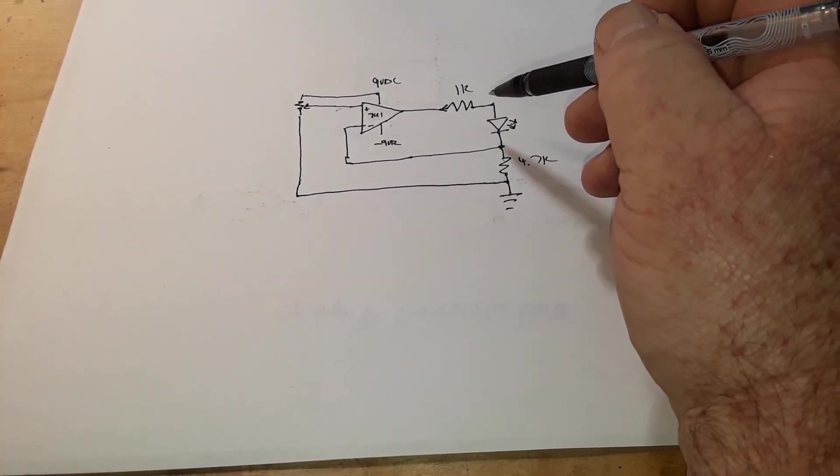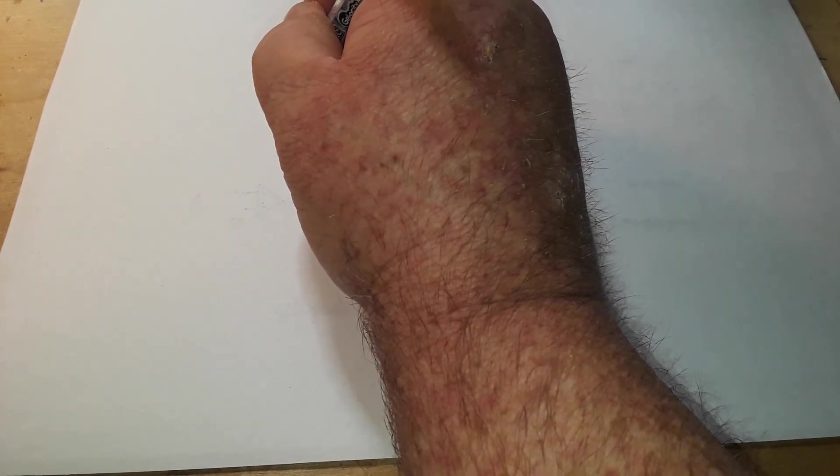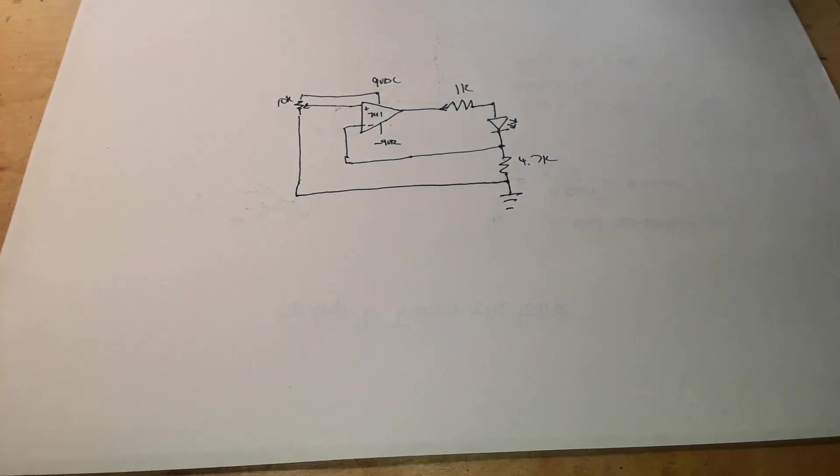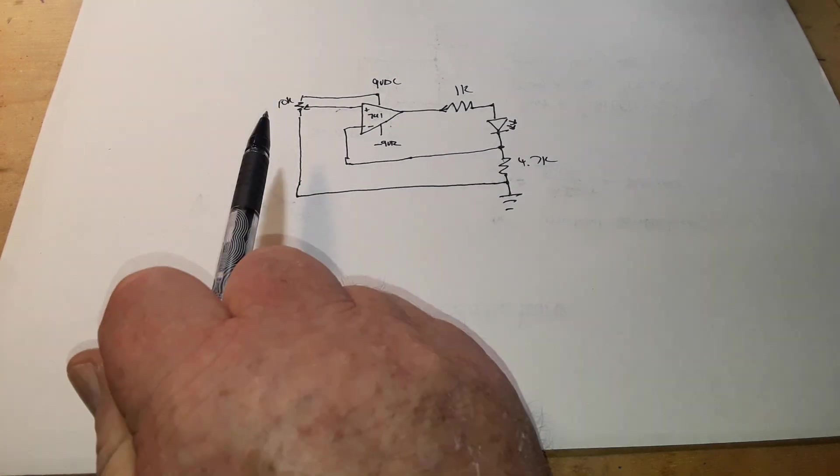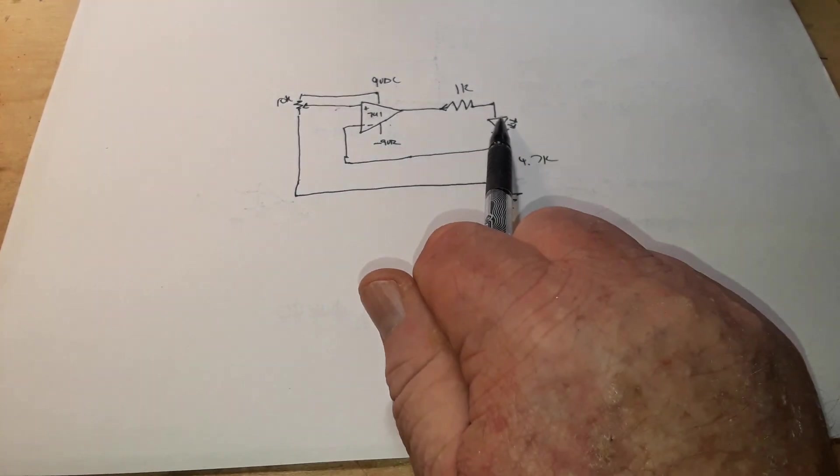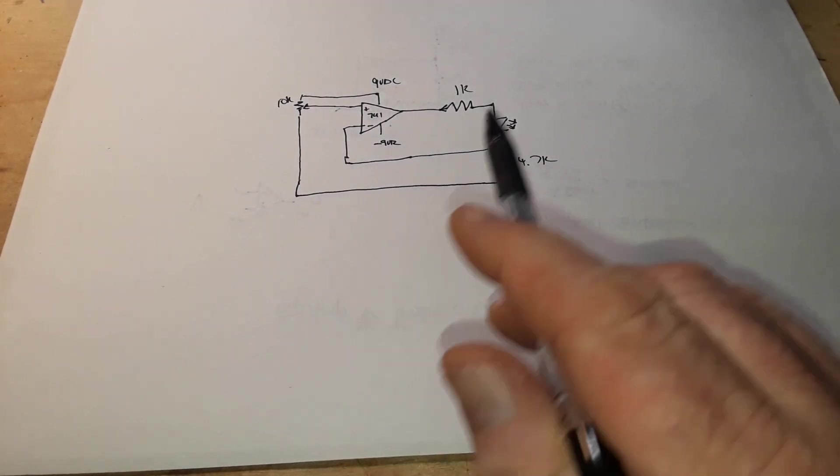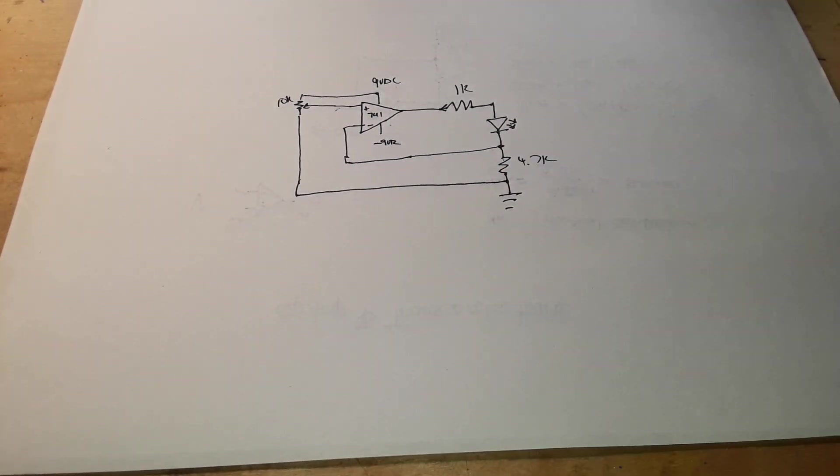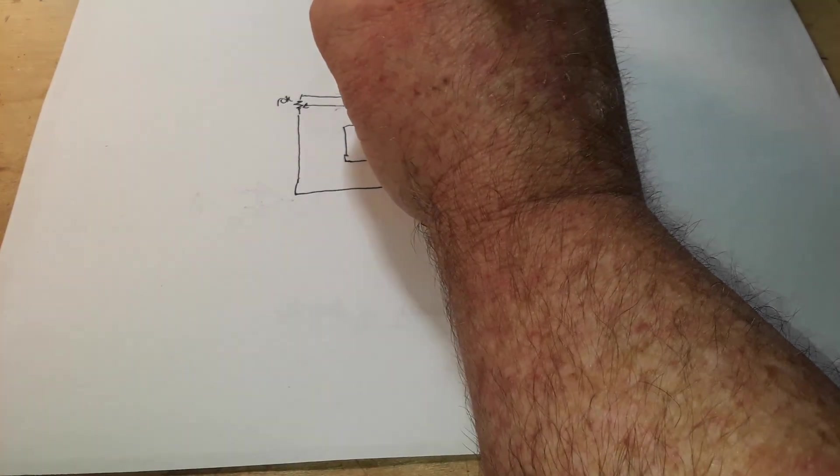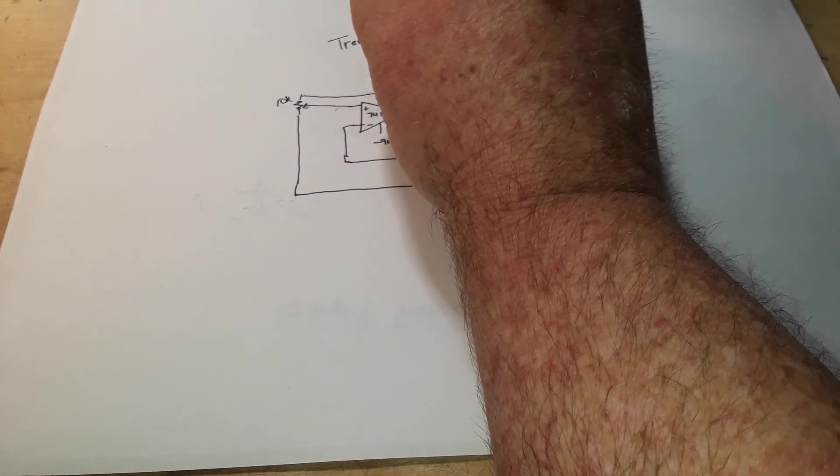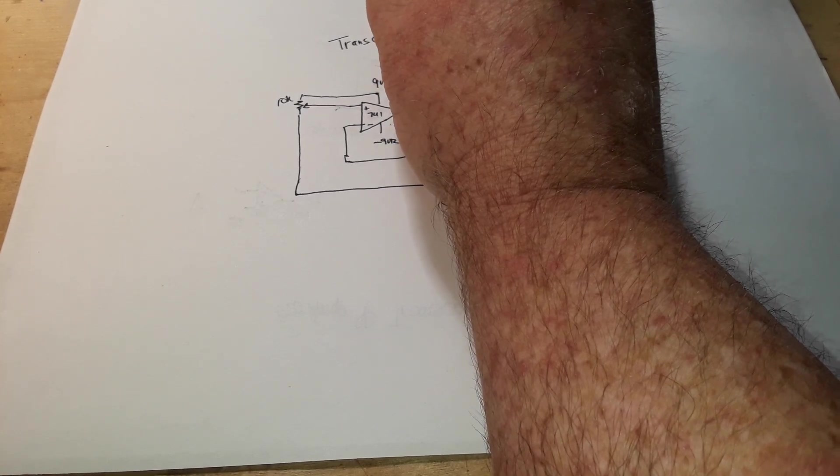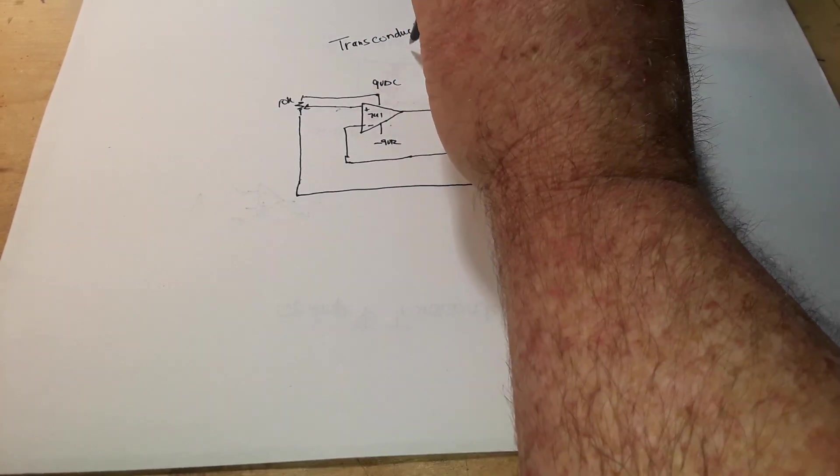Let's call this 10k, I'll keep it simple values. So now we can control the brightness of this LED by changing the voltage at the input and it will adjust the current on the output. That is again a transconductance amplifier.